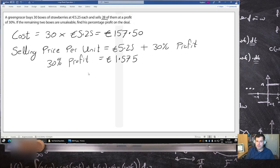So therefore, the selling price per unit, if I pop that in there, plus €5.25, that is €6.825.